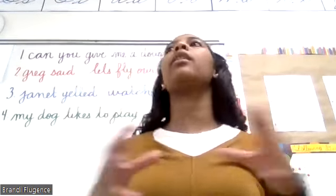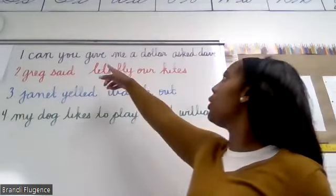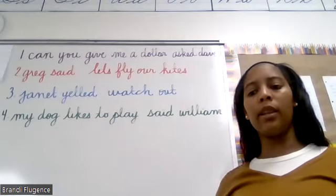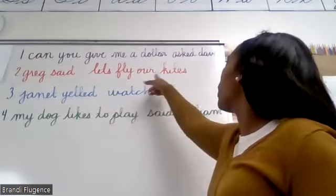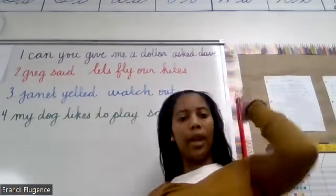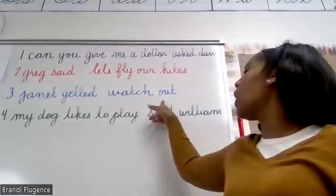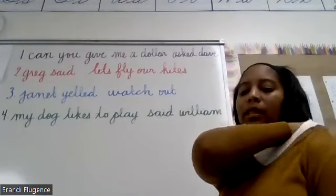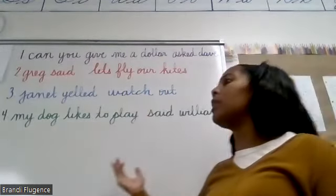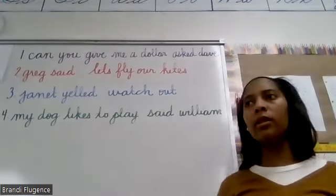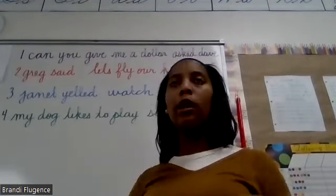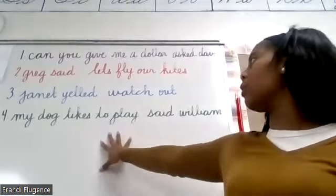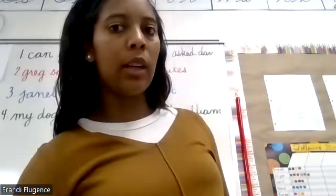So the actual words that they're saying, you will put quotation marks on their words. Let's look at number one: 'Can you give me a dollar?' asked Dave. What is Dave actually saying? 'Give me a dollar' — that's the quotation. Number two: Greg said, 'Let's fly our kites.' Number three: Jan yells, 'Watch out!' Number four: 'My dog likes to play,' said William. You can begin and then we'll go over it together.